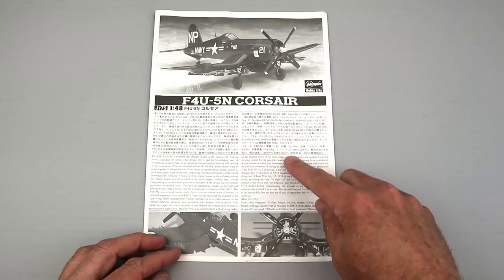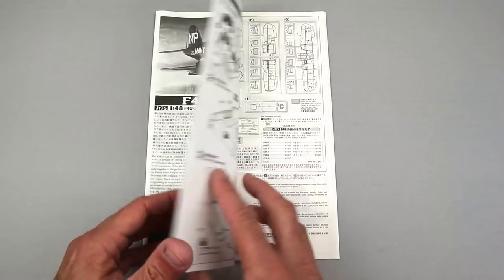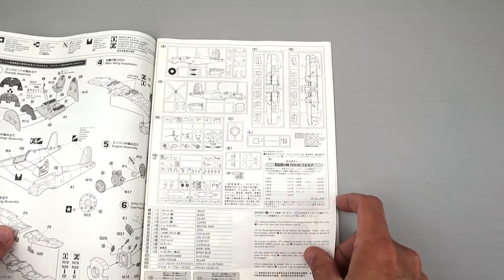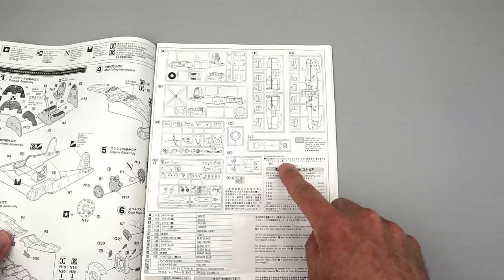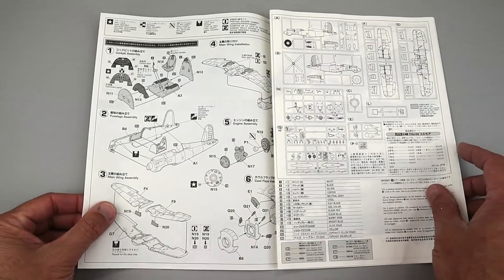The instructions are typical Hasegawa, and include a brief summary of the aircraft type, an overall parts layout, and a step-by-step illustrated building sequence.